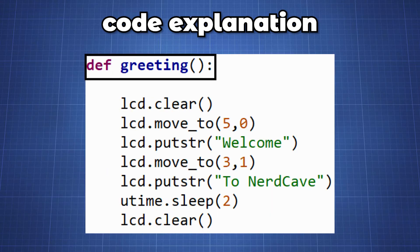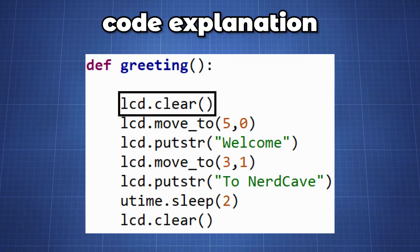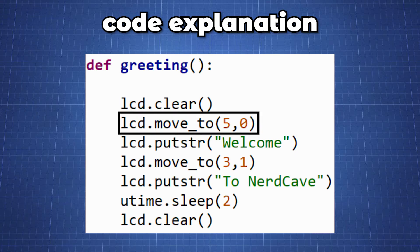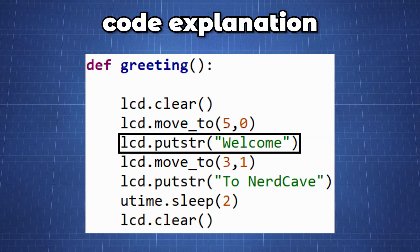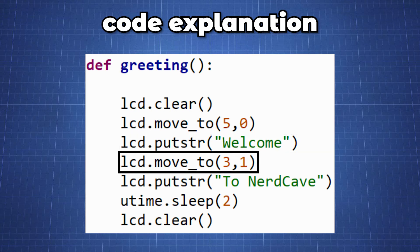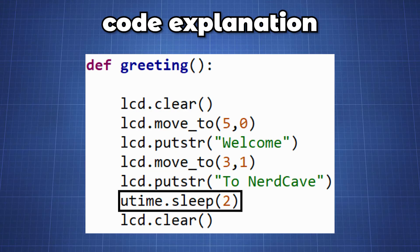To keep the code neater I created the function greeting to display welcome to the nerd cave. We first make sure to clear the LCD by using the function lcd.clear. Then move the cursor where we want our text to start. The first parameter is our X position and the second parameter is your Y position which can be 0 for the first row and 1 for the second row. In this case the cursor will be at 5 but starting writing at 6. Now we can write our string by using the putstr function. Then we can move the cursor to the third column on the second row and use the putstr function again. We then use the utime.sleep function to display the text for two seconds before clearing our LCD screen.